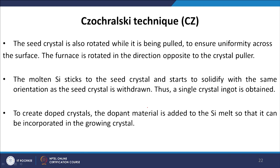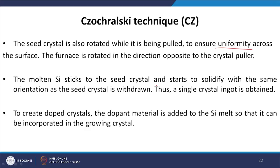In the Czochralski technique, the seed crystal is also rotated while being pulled, to ensure uniformity across the surface. The furnace is rotated in the direction opposite to the crystal puller. The molten silicon sticks to the seed crystal and starts to solidify with the same orientation as the seed as it is withdrawn, thus producing a single crystal ingot. To create a doped crystal, dopant material is added to the silicon melt so it can be incorporated into the growing crystal.